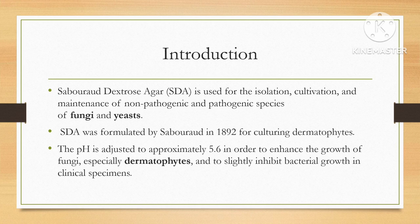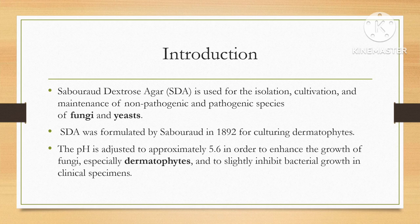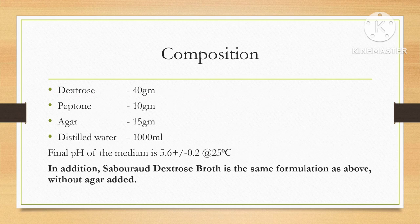This agar got its name from the scientist Sabouraud, who invented Sabouraud Dextrose Agar in the year 1892 for culturing dermatophytes. The pH is adjusted to approximately 5.6, which is acidic, to enhance the growth of fungi, especially the dermatophytes, and to slightly inhibit bacterial growth in clinical specimens. Bacteria usually grow at neutral to alkaline pH, while fungi show growth in acidic pH.